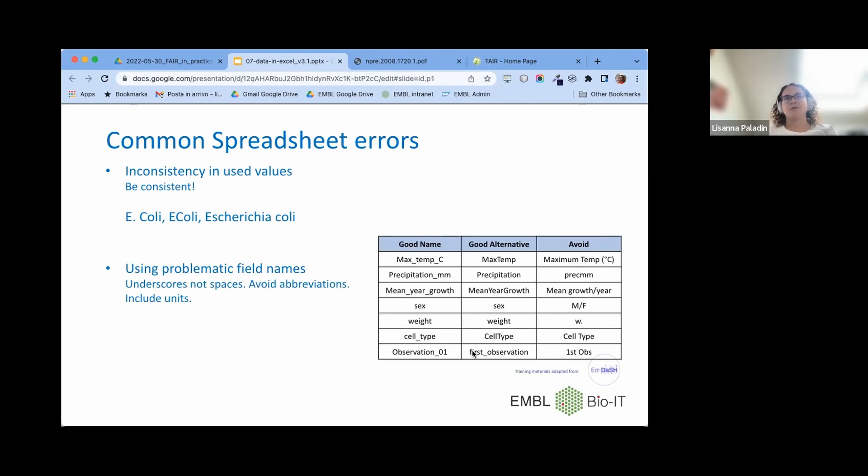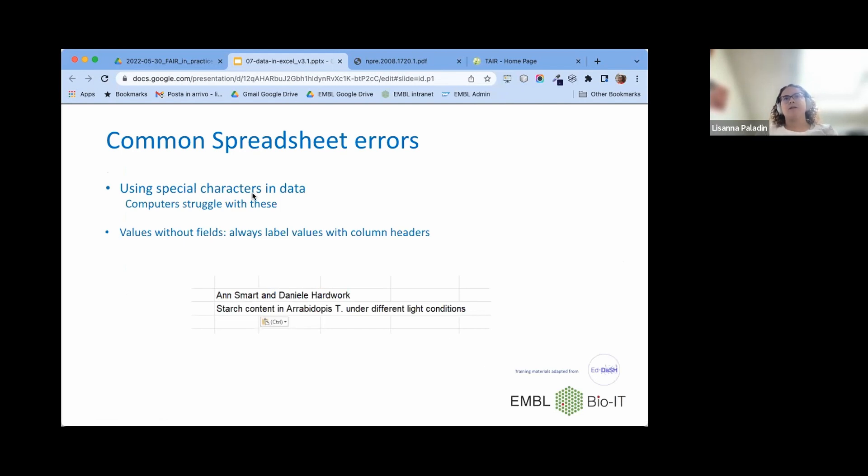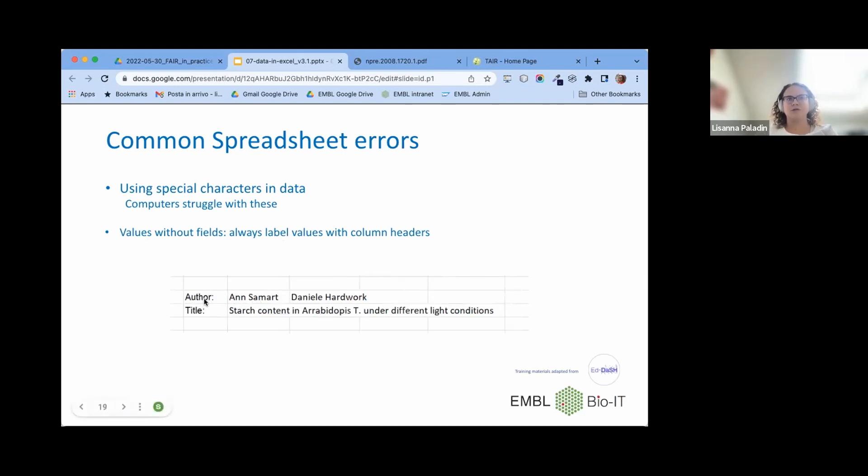Unless there's a specific question, I think we can go on. Use special characters in data. Computers in general struggle with these. So don't use them. Use values without field. So maybe at the end of your table, have two rows with some general description about the data, the authors and the file. If you do that, and I'm not saying you shouldn't, but at least put a description of what are those, so the author and title. And avoid merging cells. Because again, this is something that when you export to other formats might be lost.